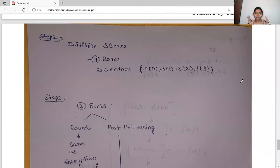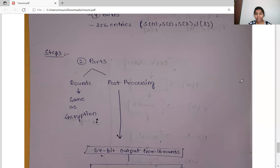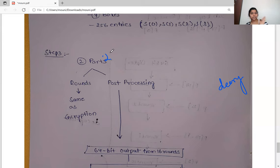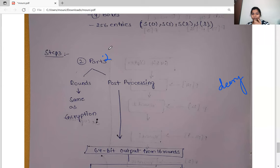For decryption we also initialize the four S-boxes — S0, S1, S2, S3 — each with 256 entries, same as encryption. The decryption process has two parts: the rounds and the post-processing. The 16 rounds are very similar to those in encryption, but we use the sub-keys in reverse order, starting from P17 down. After 16 rounds we get a 64-bit intermediate output.